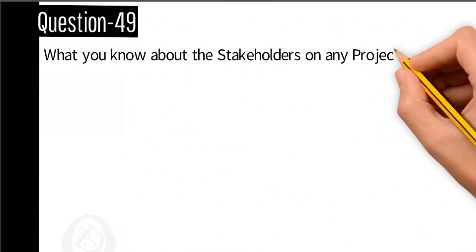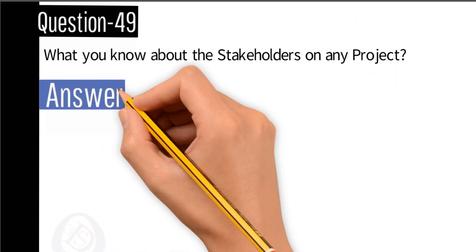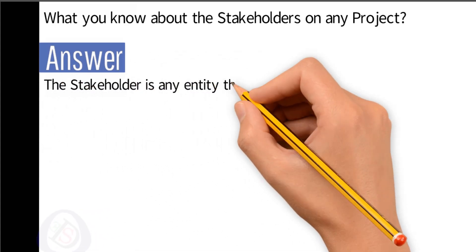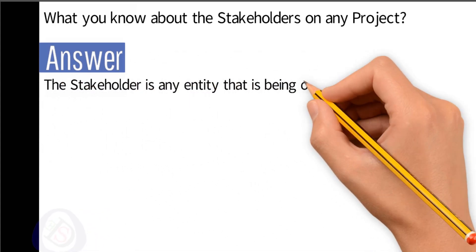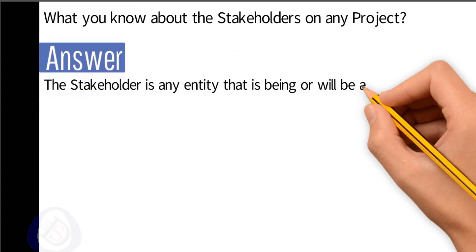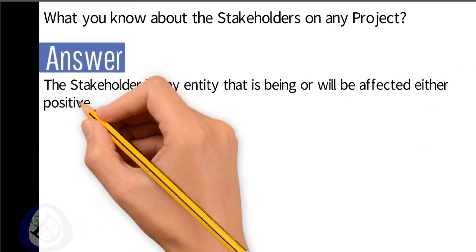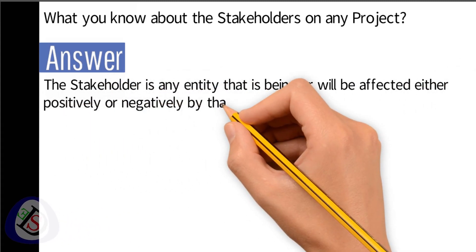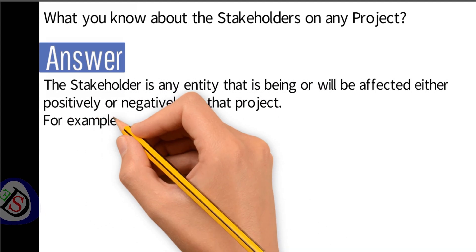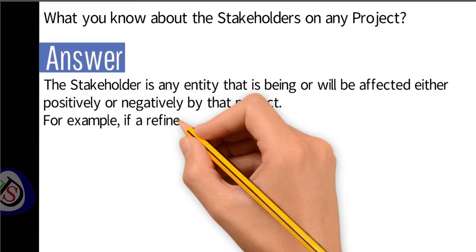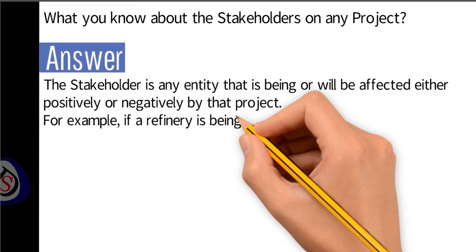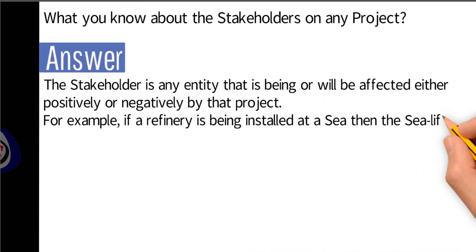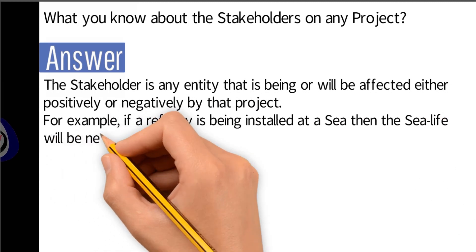Answer: a stakeholder is an entity that is being or will be affected, either positively or negatively, by a project. For example, if a refinery is being installed at sea, then sea life will be negatively affected.